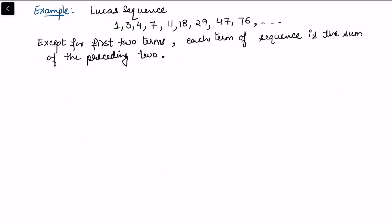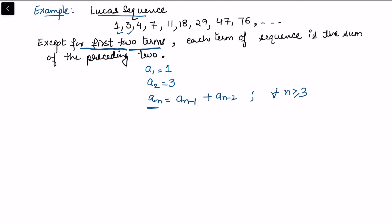Consider another example: the Lucas sequence, where except for the first two terms, each term is the sum of the preceding two. Define a₁ equals 1 and a₂ equals 3. The recurrence is aₙ equals aₙ₋₁ plus aₙ₋₂ for all n greater than or equal to 3. So the sequence goes 1, 3, 4, 7, 11, and so on.